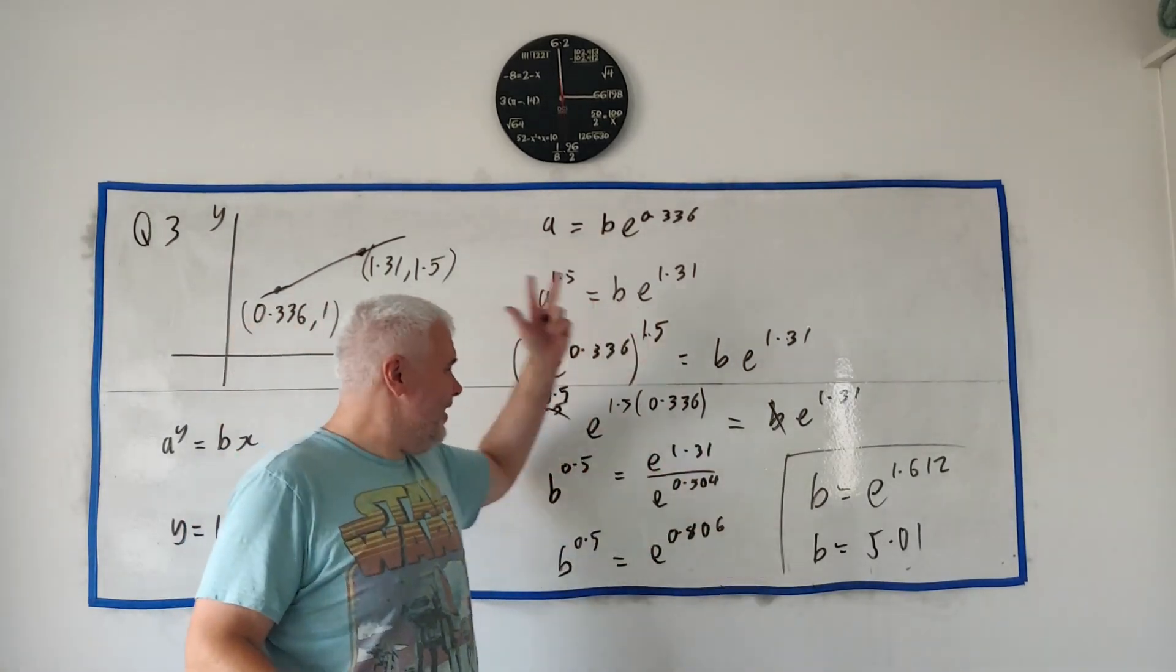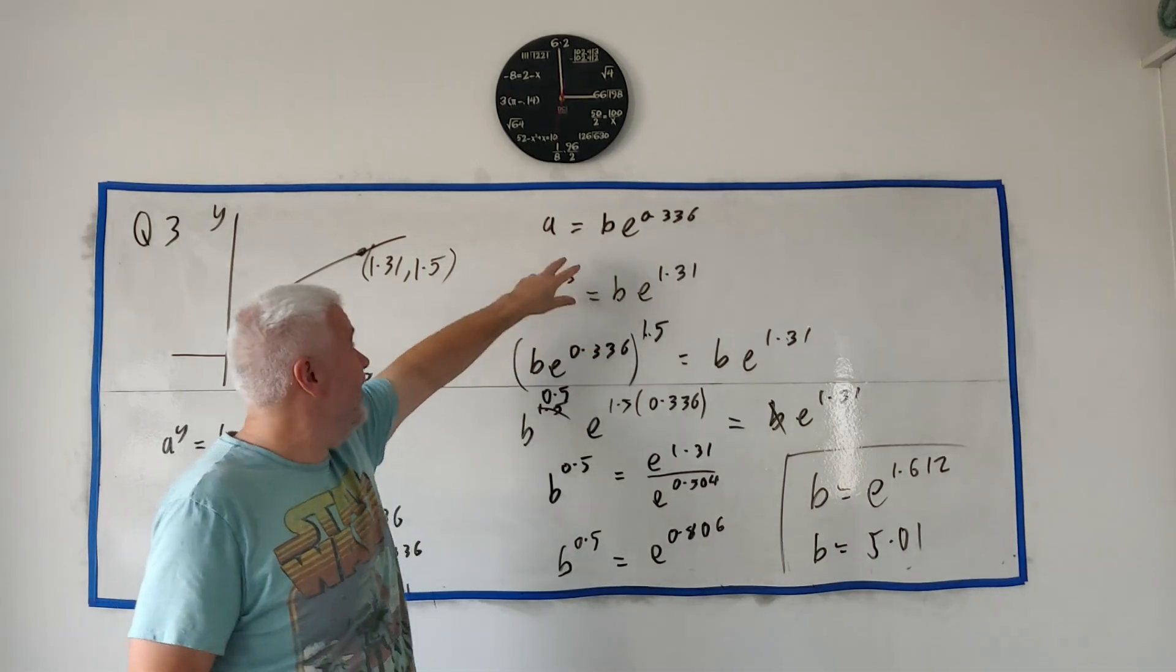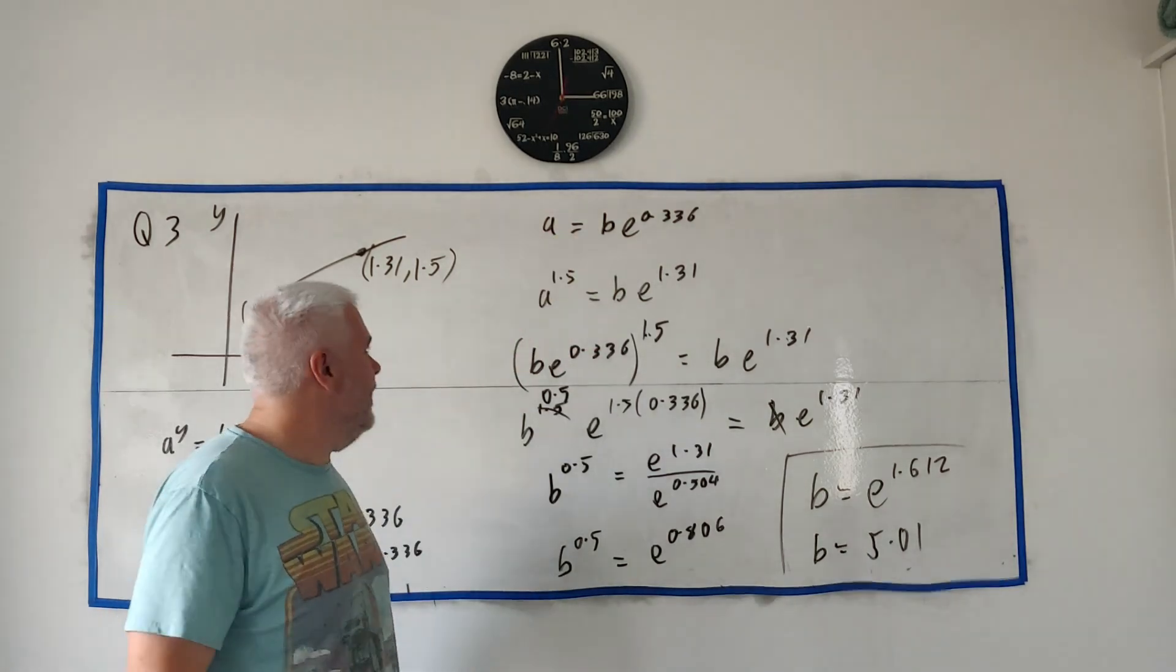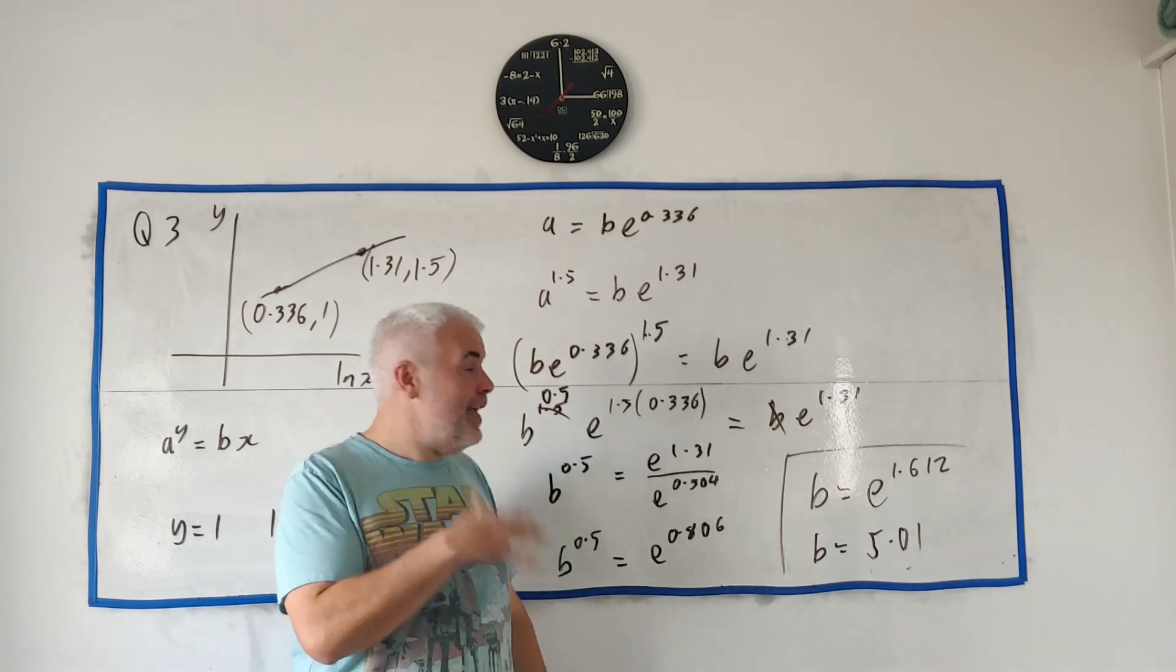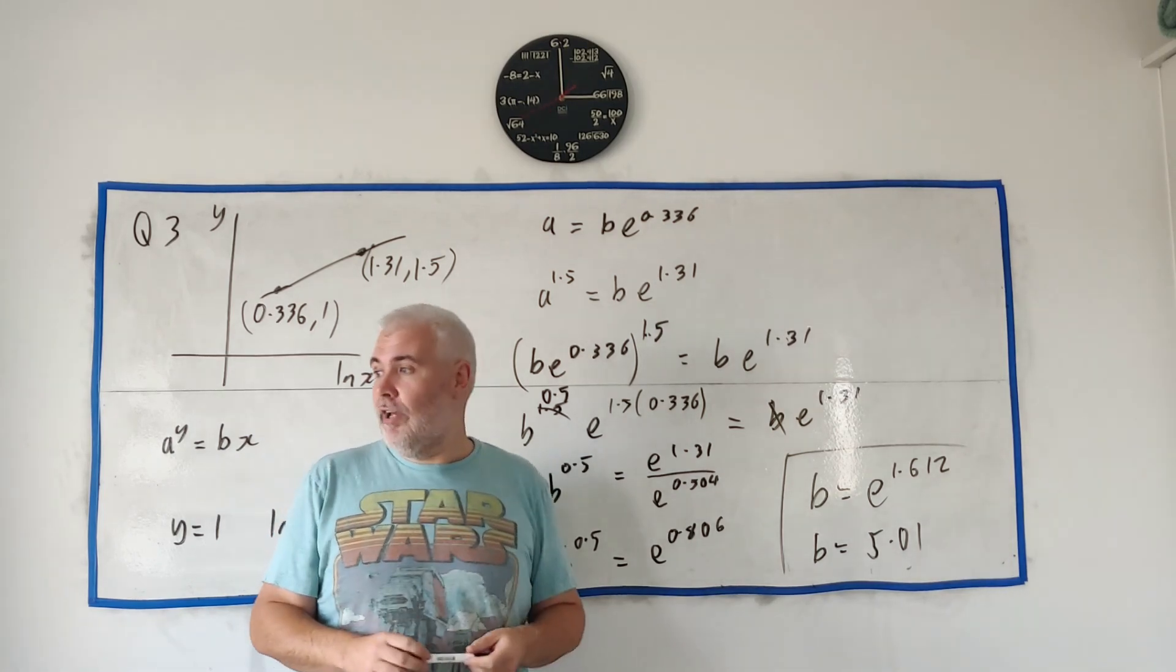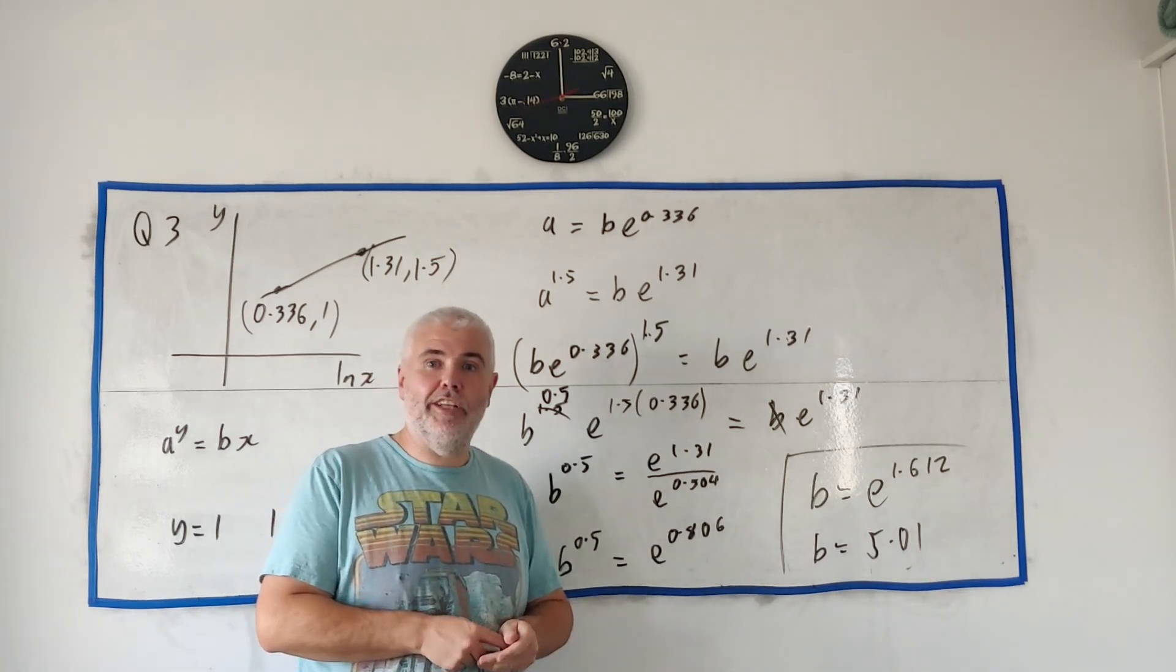And again, for a, just fill it back in, find a. I won't do it again. You'll get 7 once again. Okay, that's two ways to do question 3. I hope that helped. If I made any mistakes or you have any follow-up questions, let me know. I'll do my best to get back to you. Thanks for watching and have a good day.